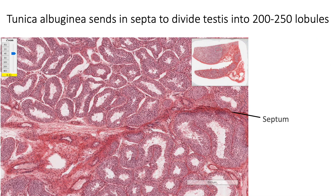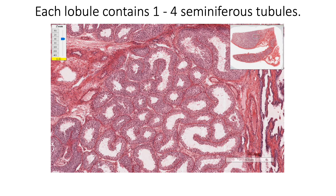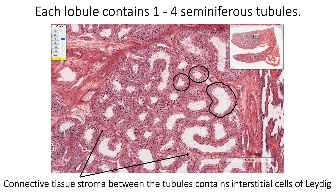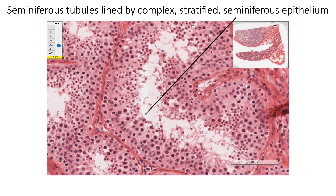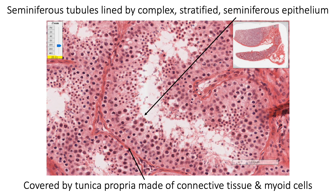The tunica albuginea sends septa inward to divide the testis into 200 to 250 lobules, each containing 1 to 4 seminiferous tubules. Each seminiferous tubule is about 50 centimeters long and is coiled within the lobule. Therefore, in a section of testis we see multiple cut sections of seminiferous tubules in each lobule with varying shape and size because they are cut in different planes. Between these sections we find connective tissue stroma containing interstitial cells of Leydig. The seminiferous tubules are lined by a complex stratified seminiferous epithelium and covered by tunica propria made up of connective tissue and myoid cells. Contraction of these myoid cells helps in movement of spermatozoa and testicular fluid into the genital ducts.